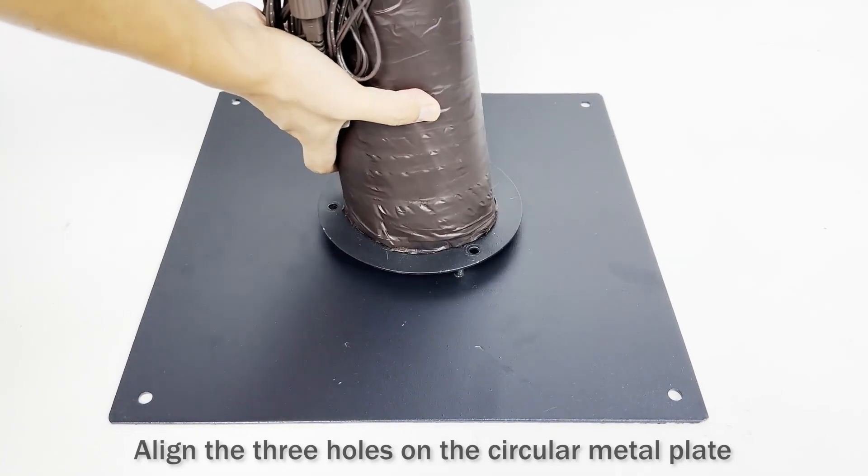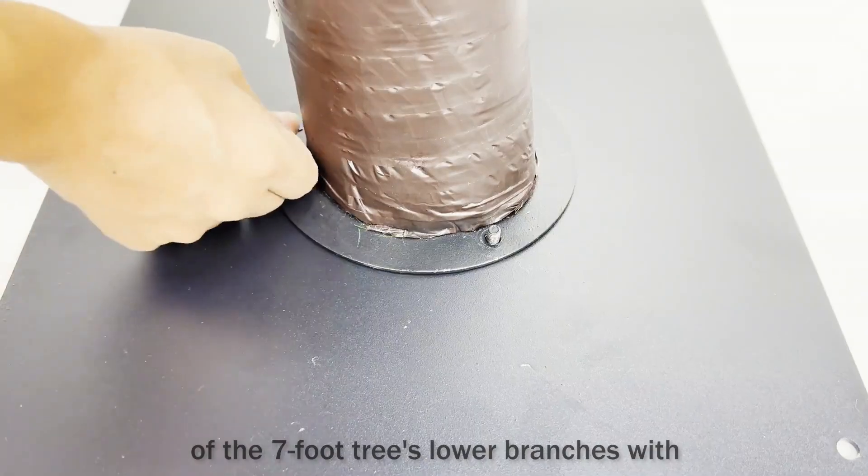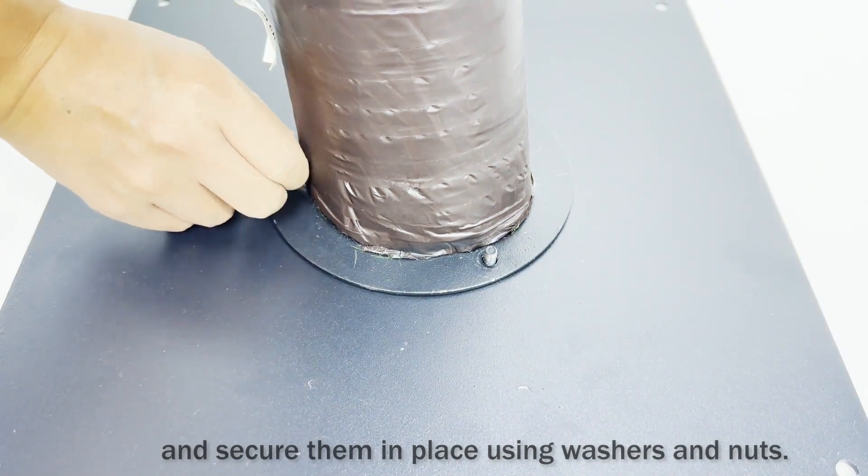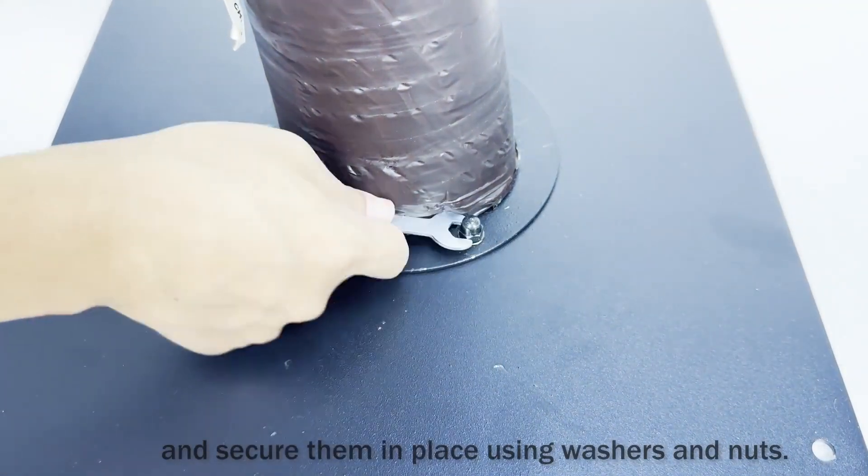Align the three holes on the circular metal plate of the 7-foot tree's lower branches with the bolts on the metal plate and secure them in place using washers and nuts.